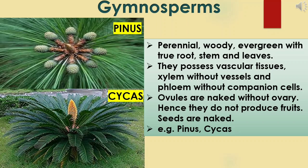Plants are classified into two types: plants which produce seeds and plants which do not produce seeds. Plants which produce seeds are classified into two types — gymnosperms and angiosperms. Gymnosperms are non-flowering plants; angiosperms are flowering plants. The plants of gymnosperms are perennial, woody, and evergreen. Based on lifespan, plants are classified into annuals (one year), biennials (two years), and perennials (more than two years). Gymnosperms live for many years, so they are perennials.